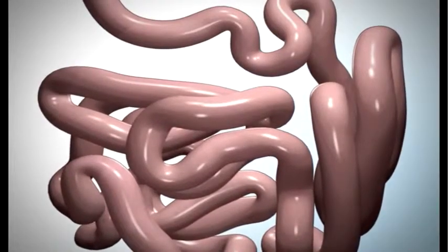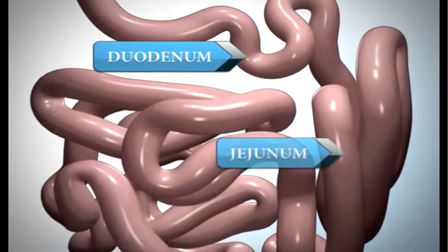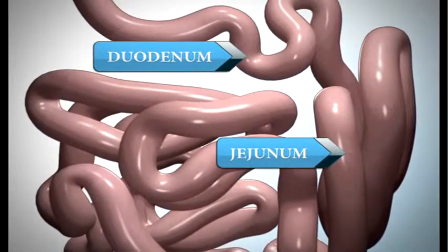Most of the nutrients from the broken down food are absorbed in the duodenum and the jejunum, which is the second part of the small intestine.